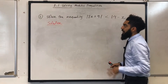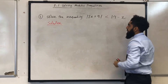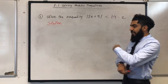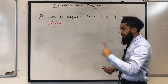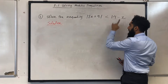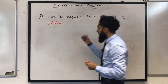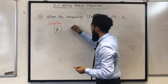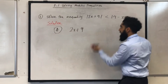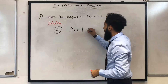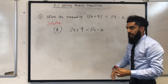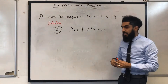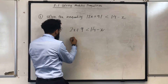Question number 1: solve the inequality — modulus of 2x plus 9 is less than 14 minus x. The very first step is to form two inequalities from this single modulus inequality. The first inequality, I'm going to call it inequality A. It will just be whatever you have inside the modulus, so 2x plus 9, is less than 14 minus x. You solve this inequality in your standard way, and you obtain the solution x is less than 5 over 3.